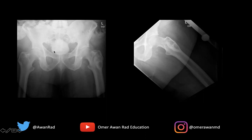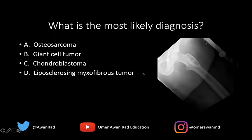We have contrast opacifying the bladder, but that's not the concern here. What I want to point your attention to is this lesion here in the left proximal femur. We see it right here, and on the lateral view, we see this area right here that is an abnormality. The question is: what's the most likely diagnosis here?